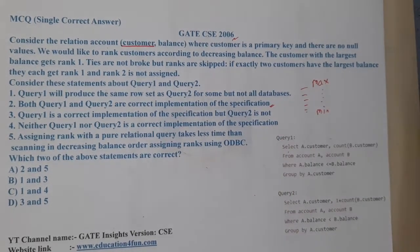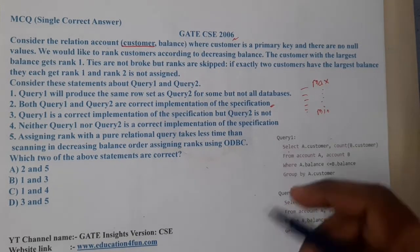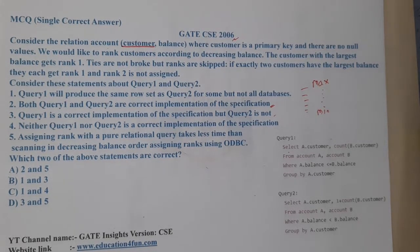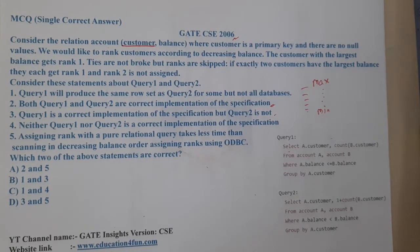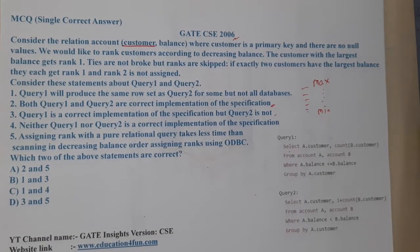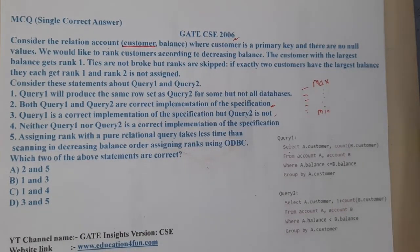Option two says both Q1 and Q2 are correct implementations of the specification — meaning they give the same output. Option three says query one is a correct implementation and query two is not. Option four says neither query one nor query two is correct. Option five discusses assigning ranks with a pure relational query versus ODBC. I am skeptical about whether a simple query can handle skipping ranks on ties.